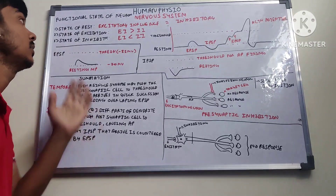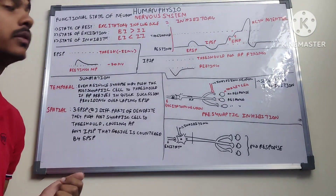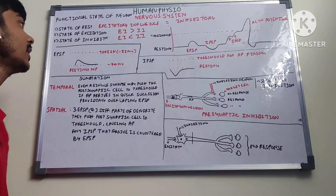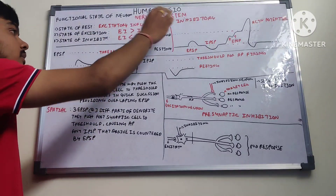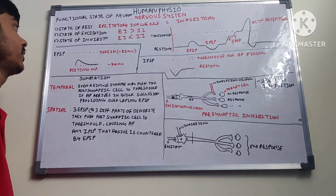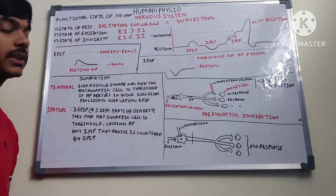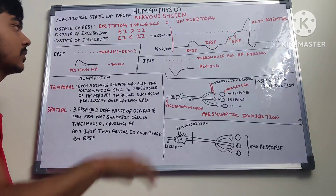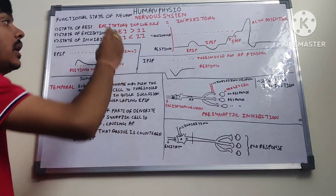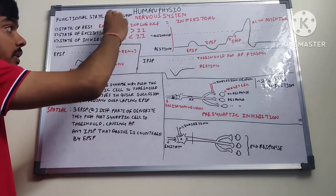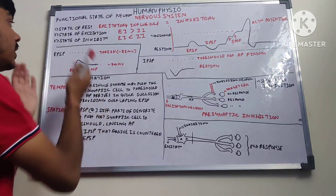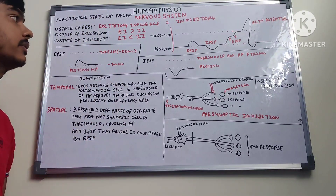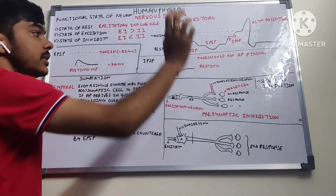Let's continue with the functional state of a neuron. Initially the neuron is at rest — excitatory influx equals inhibitory influx. In the state of excitation, some trigger occurs and excitatory influence is greater than inhibitory. In the state of inhibition, it is the opposite. The resting membrane potential is minus 70 millivolts and the threshold is minus 55 millivolts.